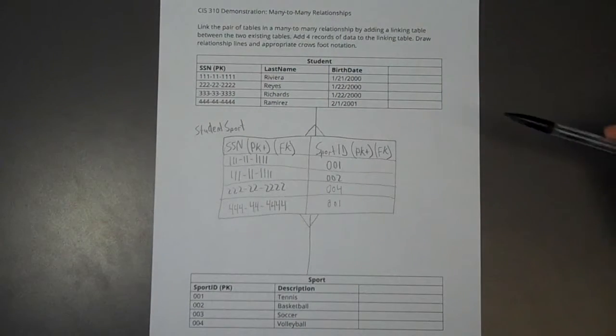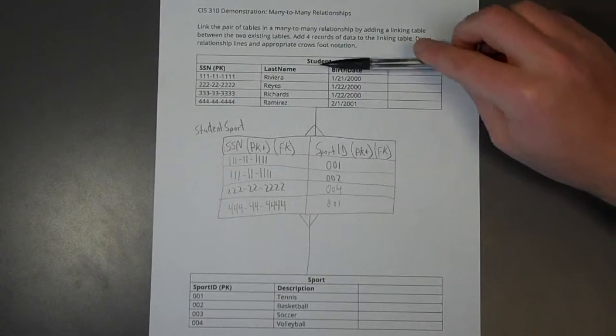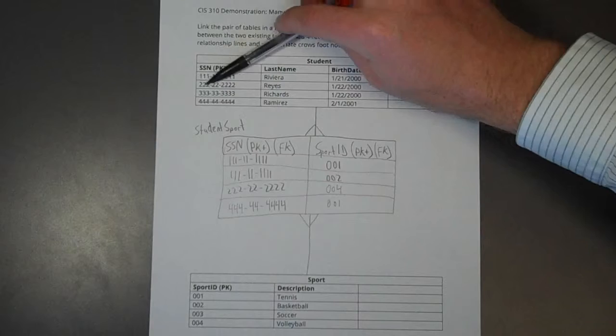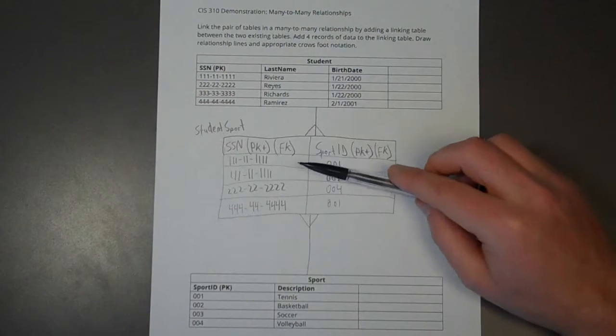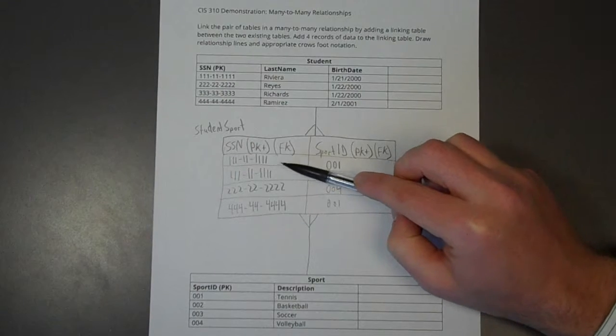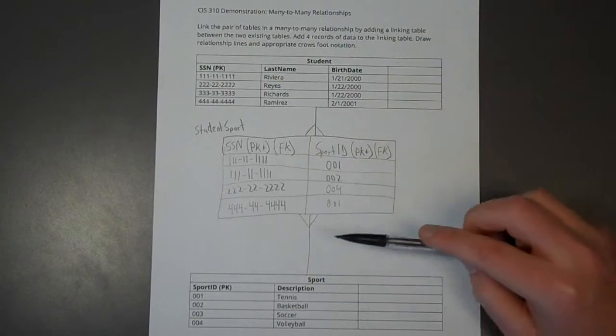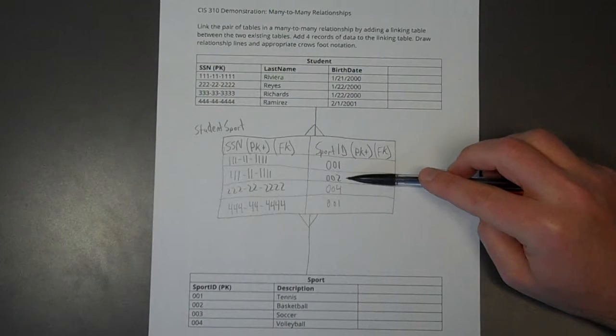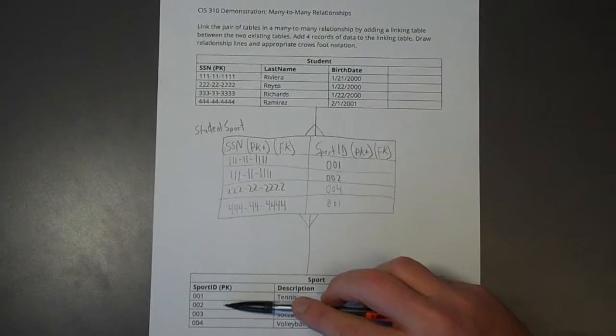So then how do we determine what sports Riviera plays? Well, we look up at the student table and see that Riviera's primary key is the social security number. So we would look for all these ones down in the social security number. And I see that in two places. So I know that Riviera plays two sports. What sports does he play? He plays sports one and two. So he plays tennis and basketball. 001 and 002.